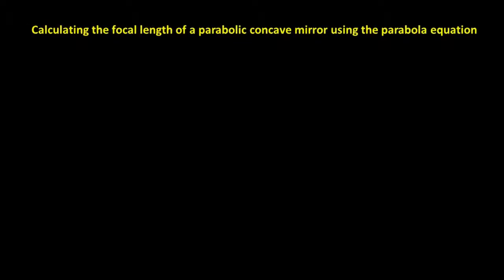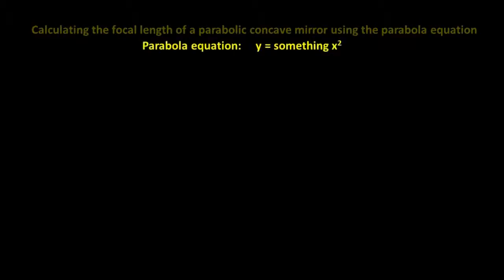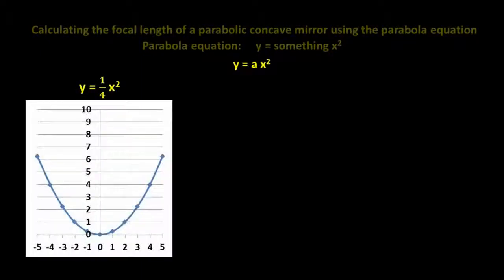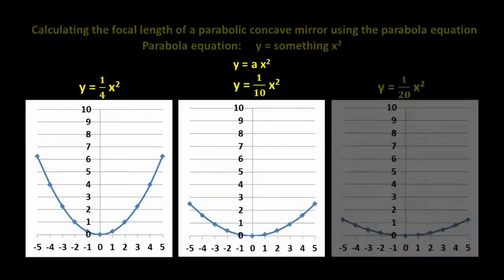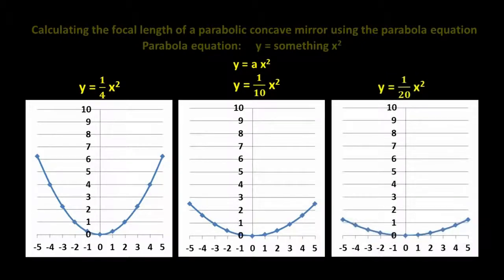We can actually calculate the focal length of a parabolic concave mirror using the parabola equation. We've already seen that parabolas follow the equation y equals something x squared. Mathematicians and scientists use the expression y equals ax squared, where the a can be any number. For example, this is the graph for a parabola that follows the equation y equals one quarter x squared. This is the graph for the parabola that follows the equation y equals one tenth x squared. And this is the graph for the parabola that follows the equation y equals one twentieth x squared.